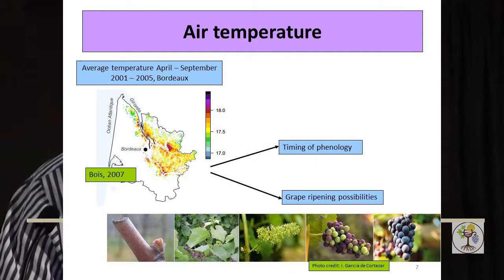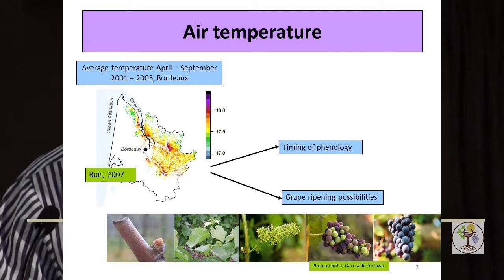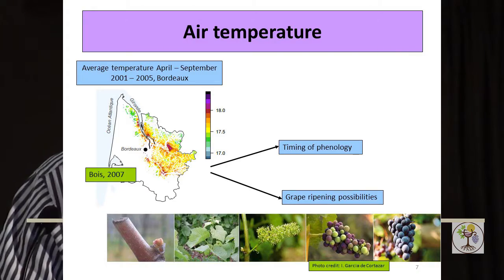Air temperature is clearly a very important terroir parameter, and temperatures are highly variable not only among wine-growing regions but also inside wine-growing regions. One of the first times this was clearly shown was during the PhD thesis from Benjamin Bois. He showed that inside the Bordeaux area, mean temperatures during the growing season can be as variable as 1.5 degrees centigrade, which is very important. These differences in temperature will have a major impact on the possibilities to bring your grapes to full ripeness, and also on the timing of phenology, which is very much driven by air temperatures.